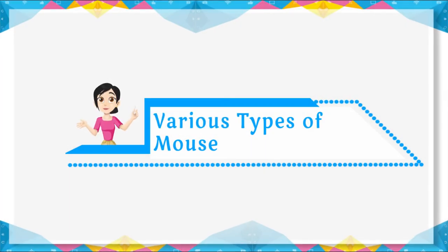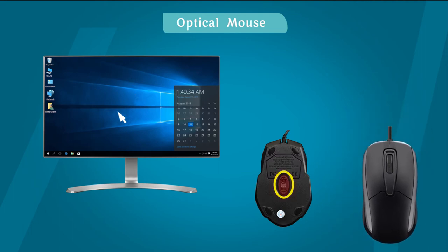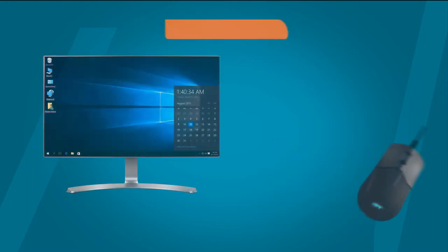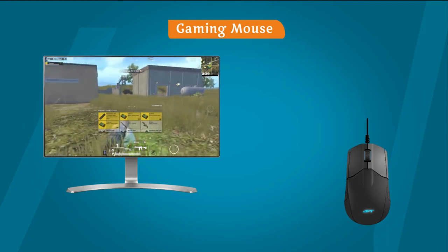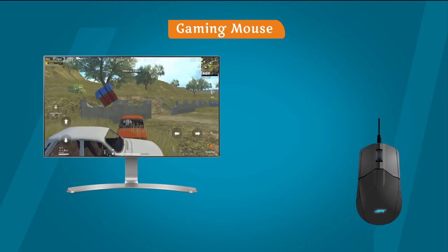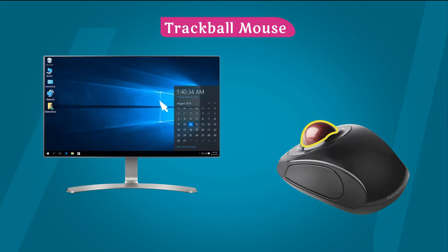There are various types of computer mouse. The optical mouse is one type. It is used to move the cursor on the computer.